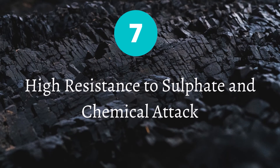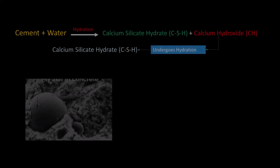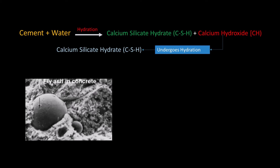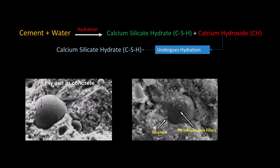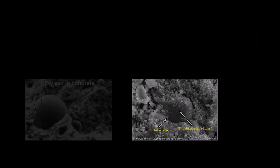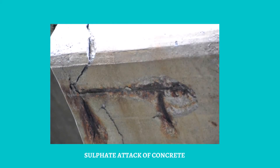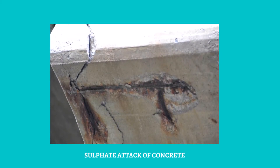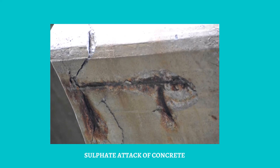Benefit 7: Fly ash produces high resistance to sulphate and chemical attack. Fly ash produces concrete that is highly impermeable, and the presence of fly ash in concrete can help reduce the amount of reaction with chemicals present in the outside environment.